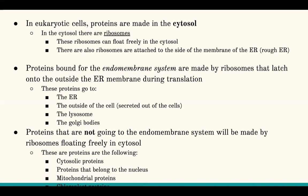Proteins that enter the endomembrane system are produced by ribosomes that are attached to the ER, and these proteins are directly funneled into the ER as they're being translated. These proteins include those destined for the ER itself, secreted proteins, lysosome proteins, and proteins that go to the Golgi bodies. Other proteins that don't go through the endomembrane system are made by freely floating ribosomes that just float around in the cytoplasm.